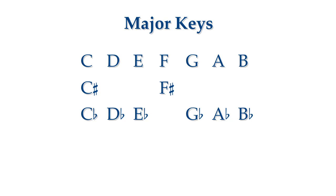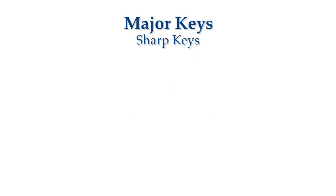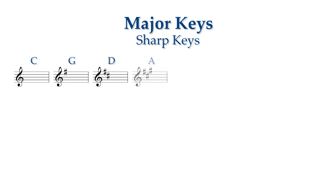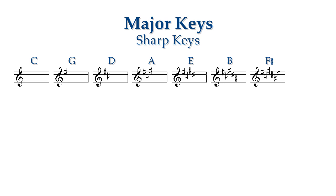Let's now put our major keys in order from least to most sharps and from least to most flats. The order of the sharp scales is C, G, D, A, E, B, F sharp, C sharp.